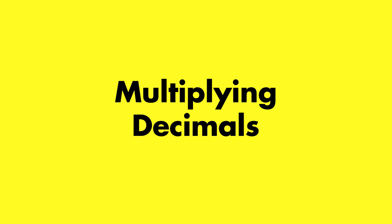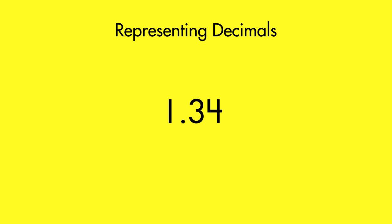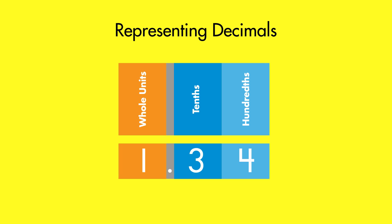Multiplying Decimals. Decimals can be represented by pictures. Let's look at the decimal 1 and 34 hundredths.